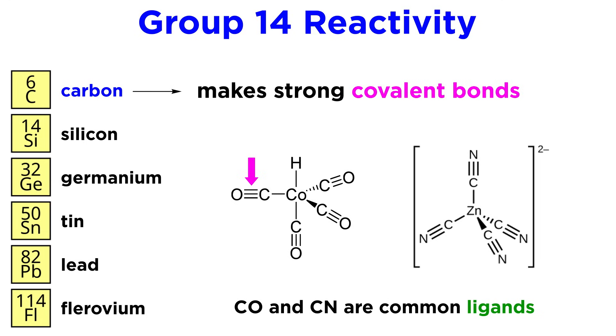Covalently speaking, carbon-oxygen bonds are extremely strong, and we will see the CO ligand in many transition metal complexes. Carbon-nitrogen bonds are also strong, so we can say the same for CN ligands. More on these later.